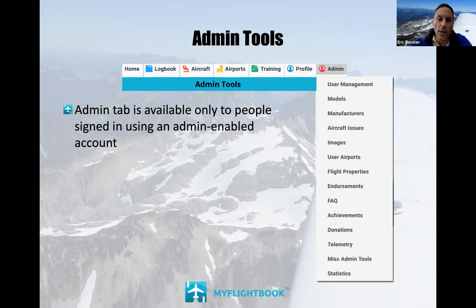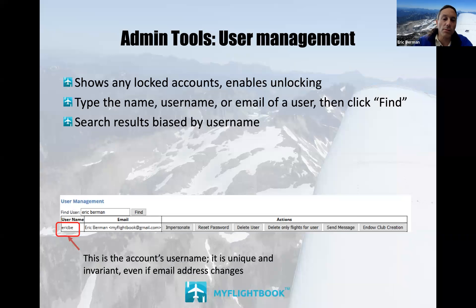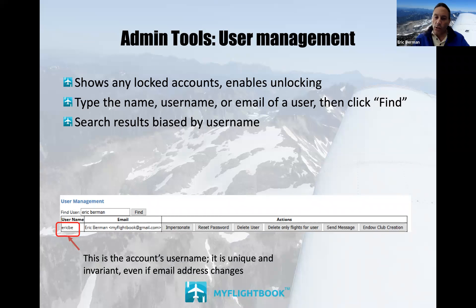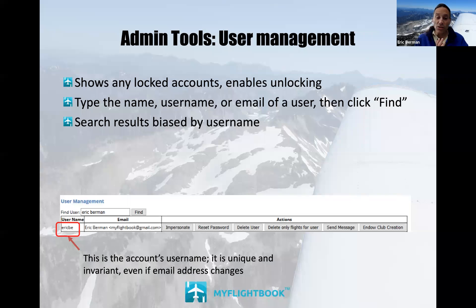I'll walk through these one at a time. For customer support, the most important one is user management — I probably use that more than any other. When I go in, it'll show me any locked accounts and I just click a button to unlock. Otherwise I can search for a user by their name, first name, last name, email address, or username. You sign in using your email address, which maps to an underlying username that is unique and never changes.